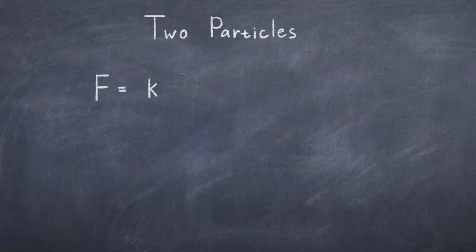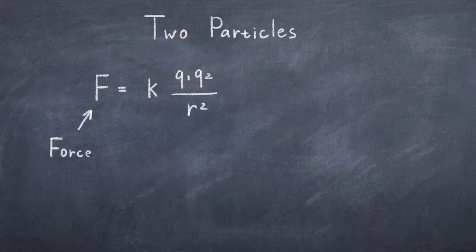Let's now consider the case of two particles with different charges. They will form a field where the lines go from positive to negative. We can describe the force between these particles as F equal to k q1 times q2 over r squared.